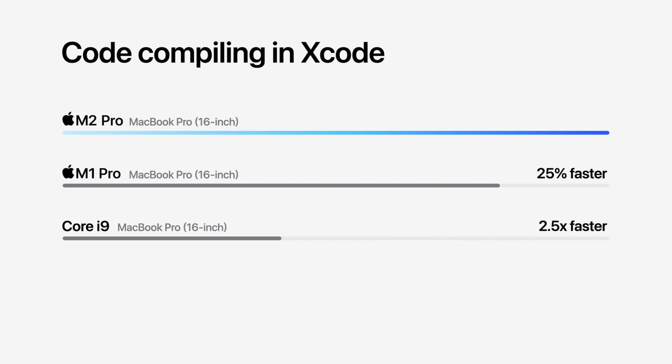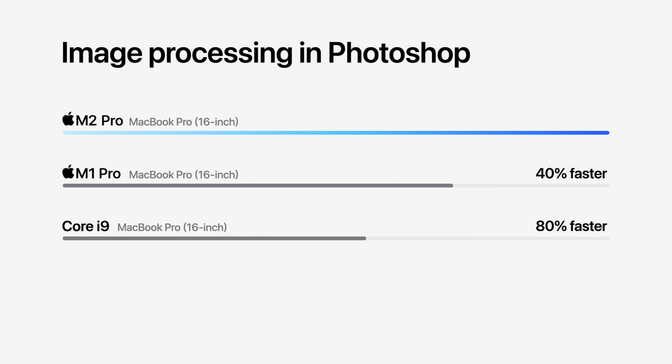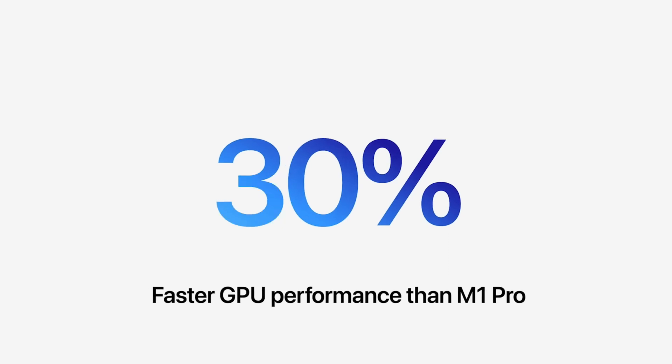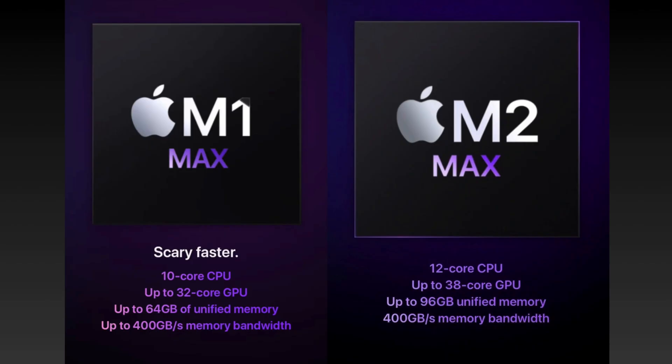In terms of performance, the M2 Pro can compile code in Xcode 25% faster than the M1 Pro. For image processing in Photoshop, it's 40% faster than M1 Pro, and 80% faster than any Core i9 processor MacBook Pro — a huge leap. Overall, CPU performance is 20% faster and GPU performance is 30% faster than the M1 Pro.